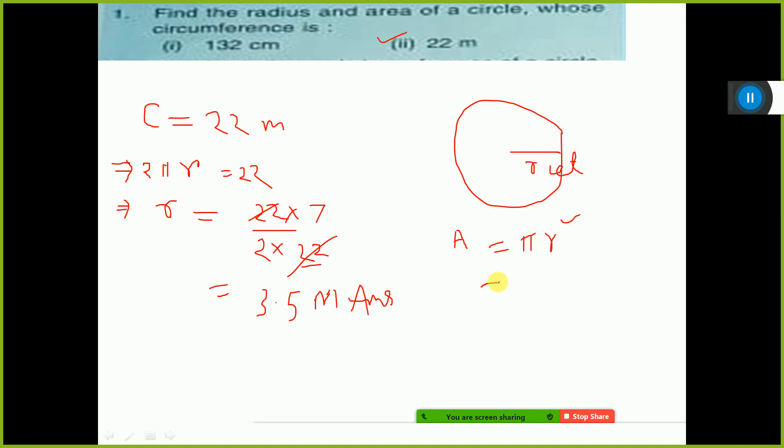What is the value of π? 22 by 7. And what is the value of r? 3.5 into 3.5. r square, that is why you have to write 2 times.